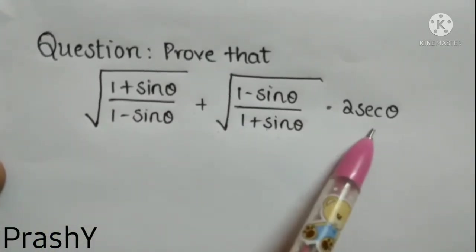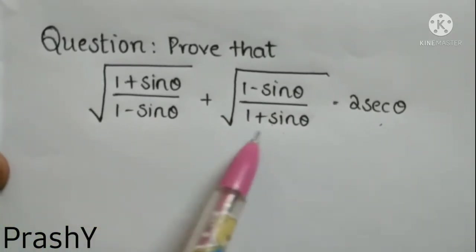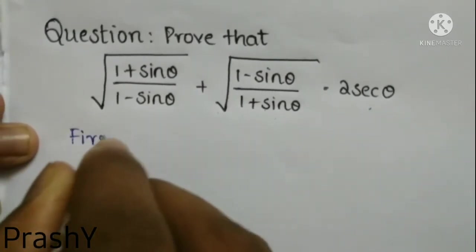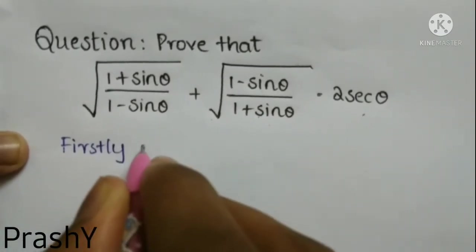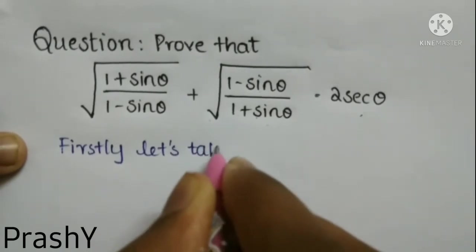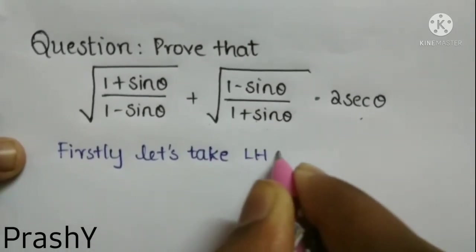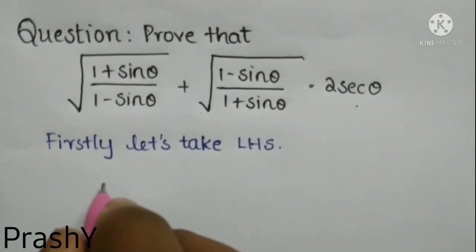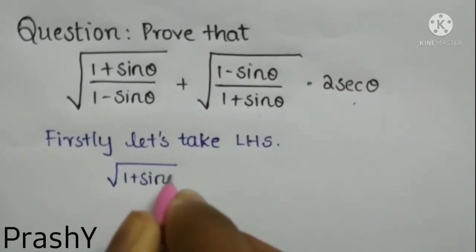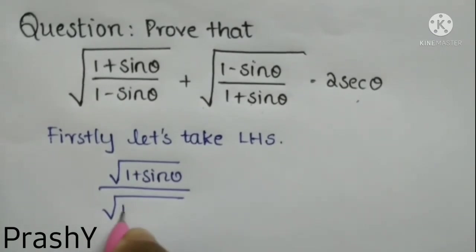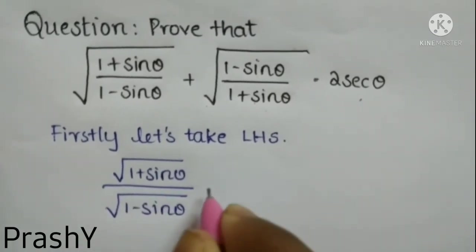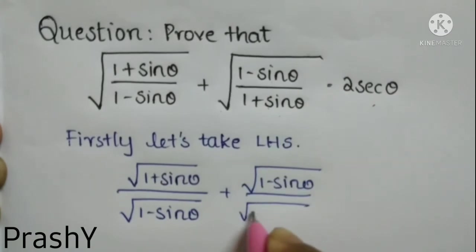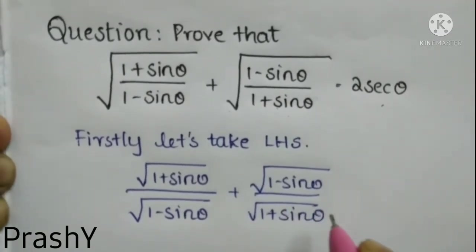So here we need to prove that LHS is equal to RHS. First, we have a root for both the numerator and denominator, so we have to divide it. Let's take LHS. We write root over (1 + sin θ) by root over (1 − sin θ), plus root over (1 − sin θ) by root over (1 + sin θ).